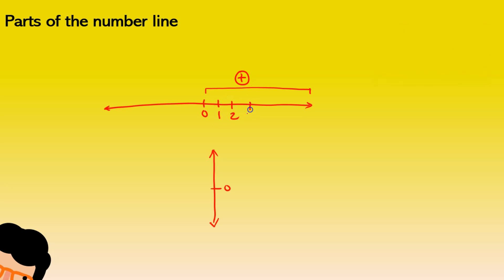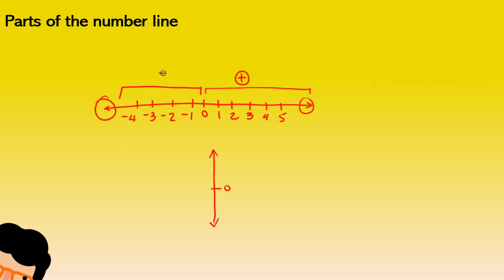So zero, one, two, three, four, five, and so on. And then to the left, you're going to have them in descending order: minus one, minus two, minus three, minus four, and so on. These lines give you the idea that the numbers are actually going to continue until plus infinity and minus infinity — really big numbers.